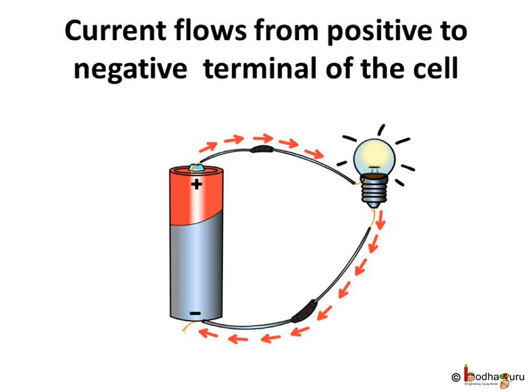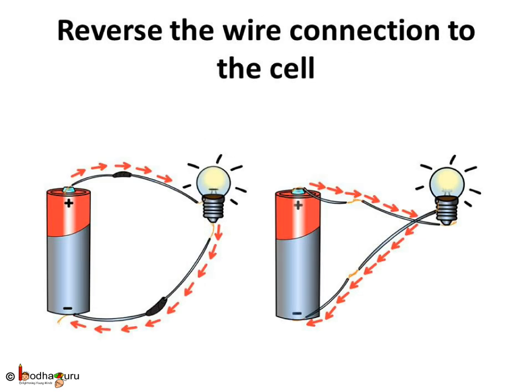Current reaches one terminal of the bulb from the positive end of the cell and then comes back to the cell through the wire connected to the other terminal of the bulb. Now we know both the terminals of the cell need to be connected to the bulb to provide the complete path for the flow of electricity. When we reverse the wire connection from the cell, the bulb still glowed because both the terminals of the cell are connected to the bulb, providing the complete path for the flow of electricity.